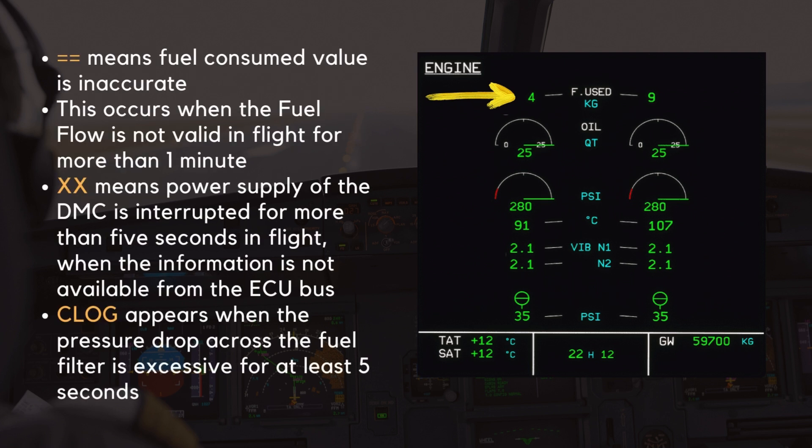If two amber dashes appear over all five digits, then the fuel consumed value is inaccurate. This occurs when the fuel flow is not valid in flight for more than one minute. The indication is replaced by two amber crosses if the power supply of the DMC is interrupted for more than five seconds in flight when the information is not available from the ECU bus. An amber clog indication appears under the digital Fuel Used indication when an excessive pressure drop across the fuel filter is detected for at least five seconds.